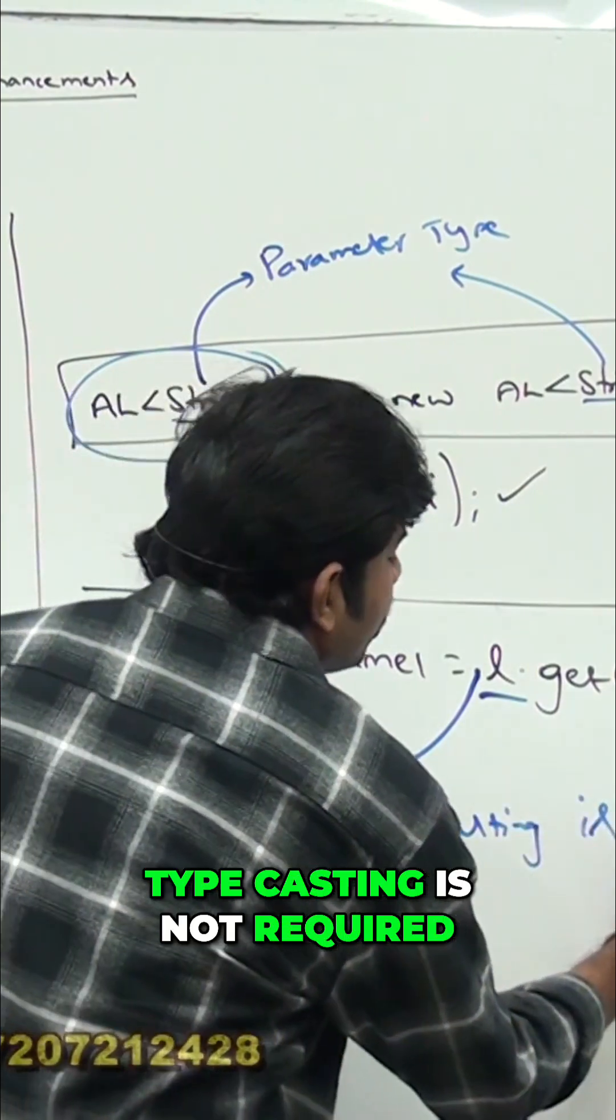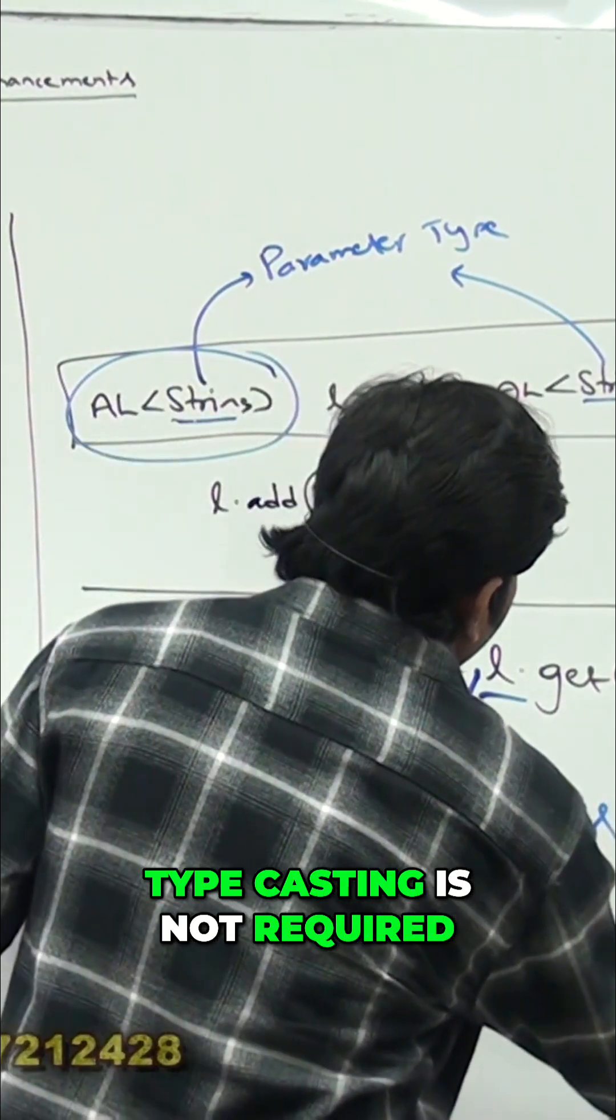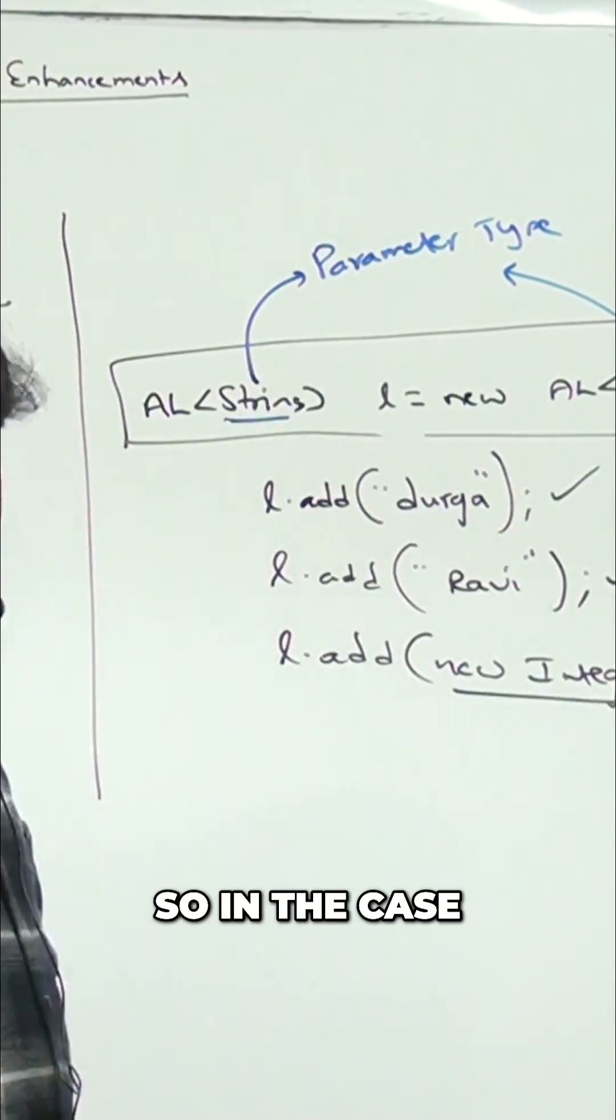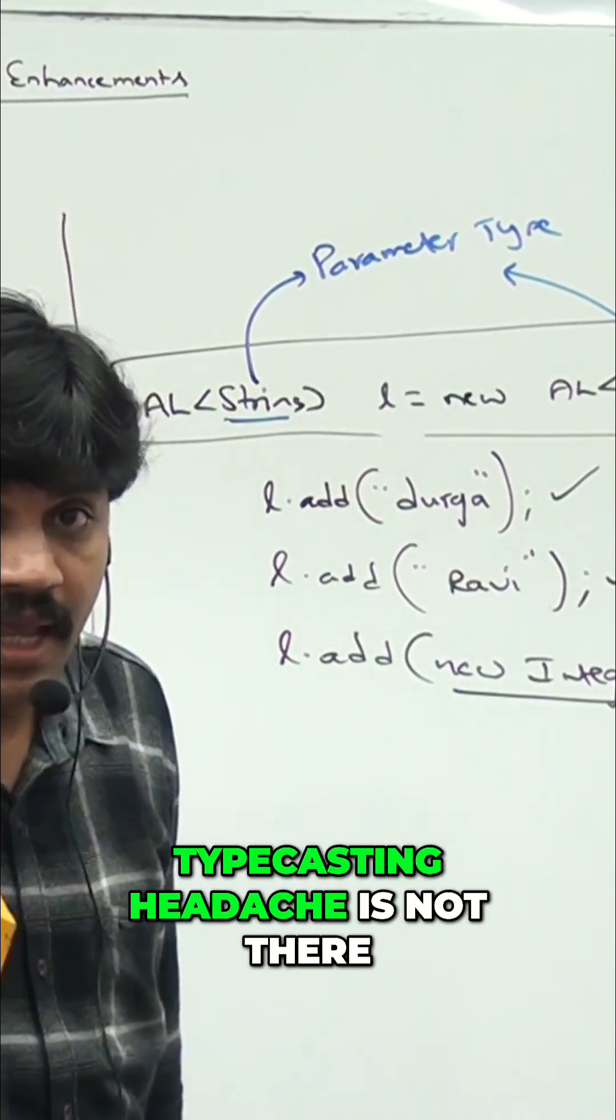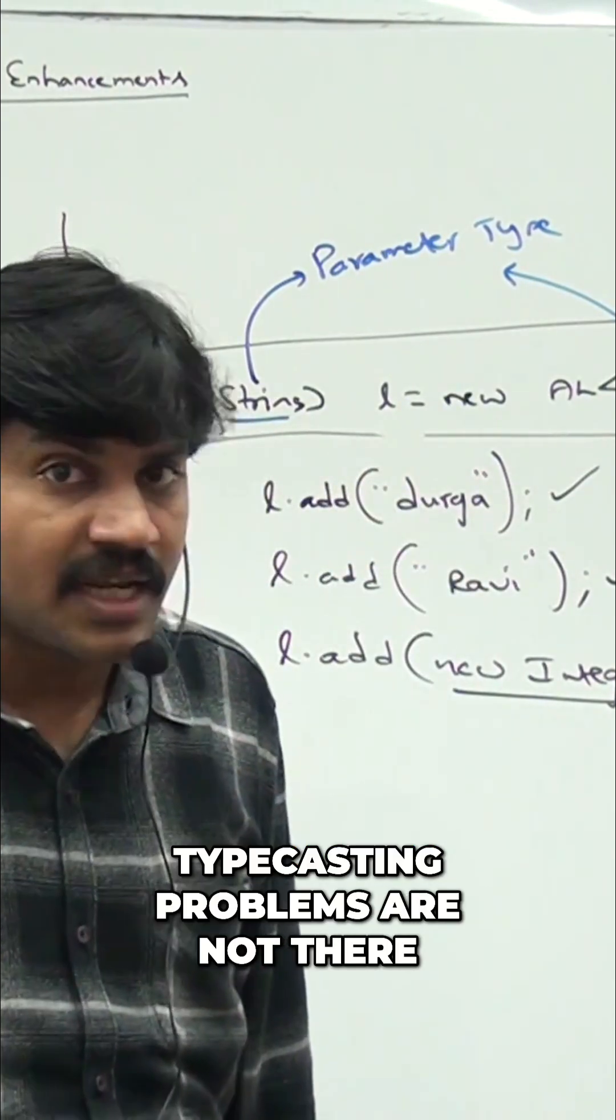Typecasting is not required in the case of generics. In generic collections, typecasting headaches and typecasting problems are not there.